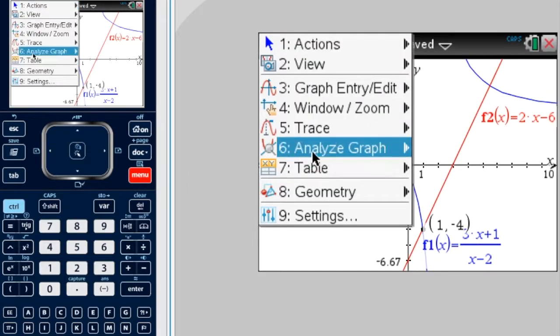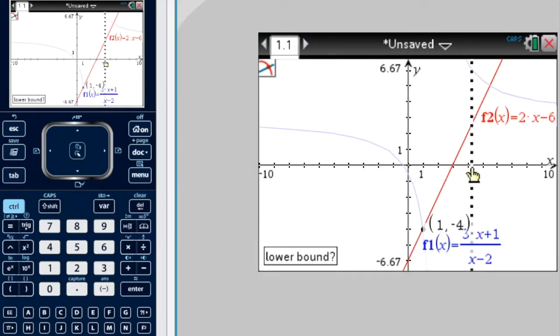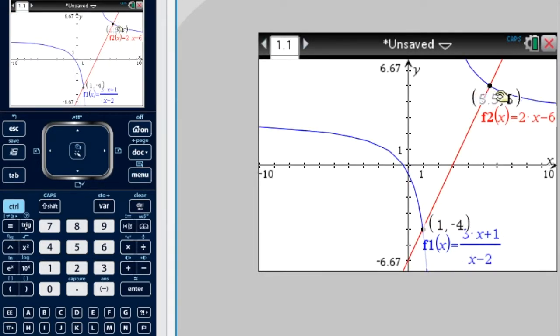Then I'll just do it again. Lower bound, upper bound. And there's our other point of intersection which is 5.5, 5.